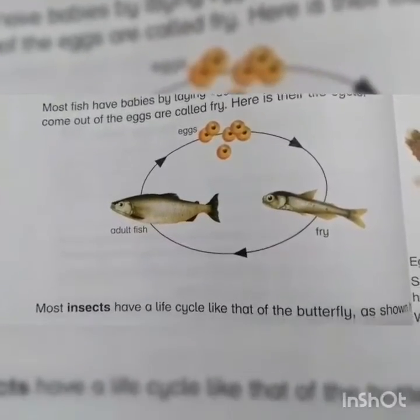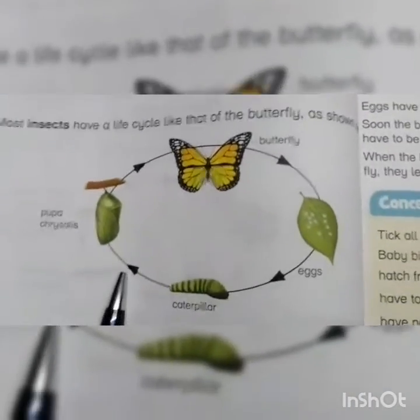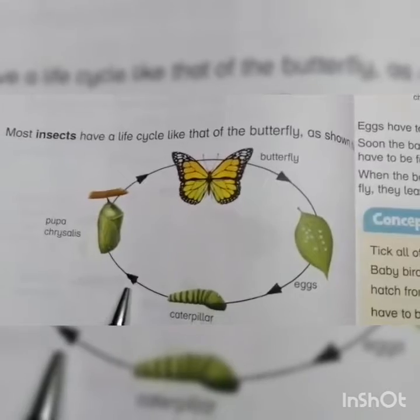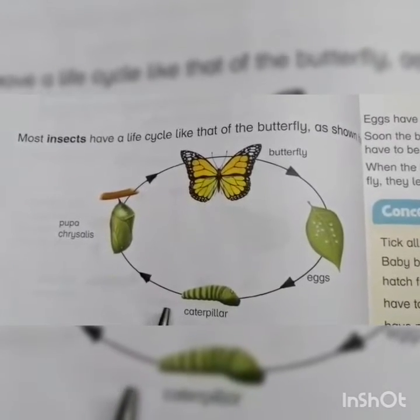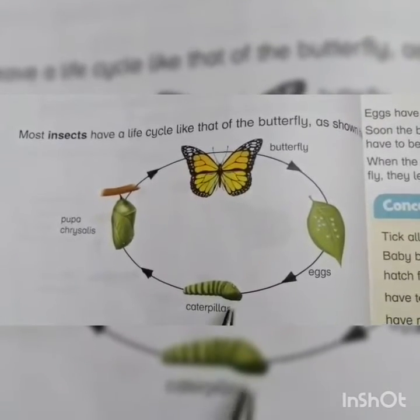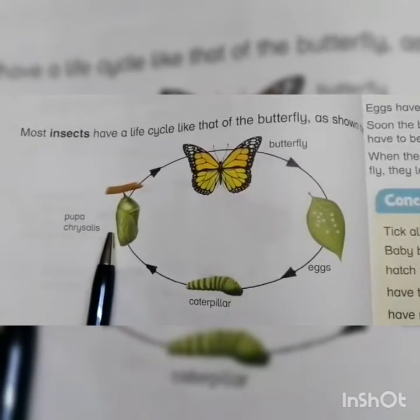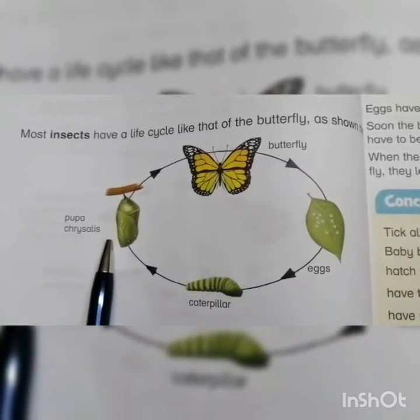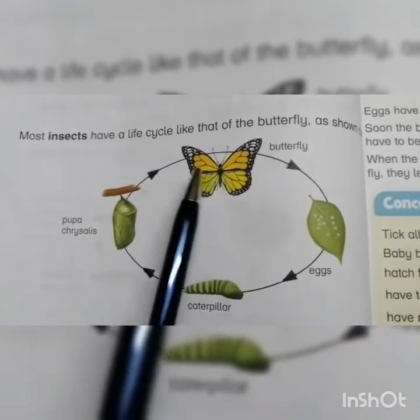Now the life cycle of a butterfly. A butterfly lays eggs, and the egg changes into a caterpillar. The caterpillar changes into a pupa, and the pupa changes into a butterfly.